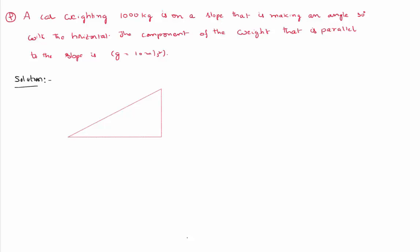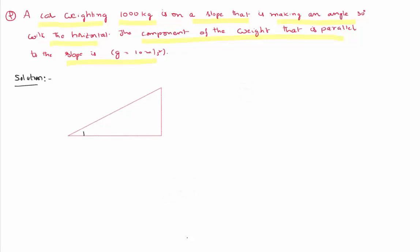Hello everyone, today in this video lesson we are going to solve a problem. There is a car weighing 1000 kilograms on a slope making an angle of 30 degrees with the horizontal. We need to calculate the component of the weight that is parallel to the slope. Imagine an inclined plane with the angle of inclination theta equal to 30 degrees, and a body of mass 1000 kilograms on the inclined plane.